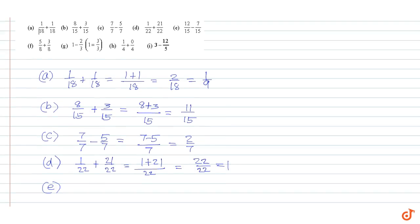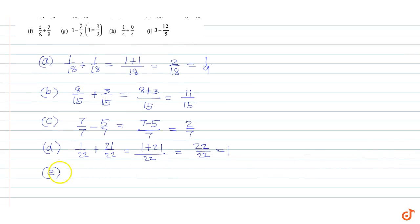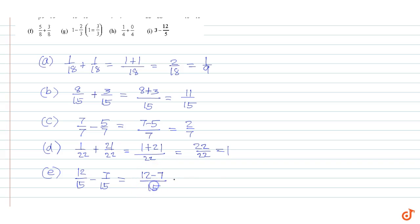Part e: 12/15 minus 7/15. Since the denominators are equal, we can write 12 minus 7 divided by 15, which equals 5/15, which simplifies to 1/3.